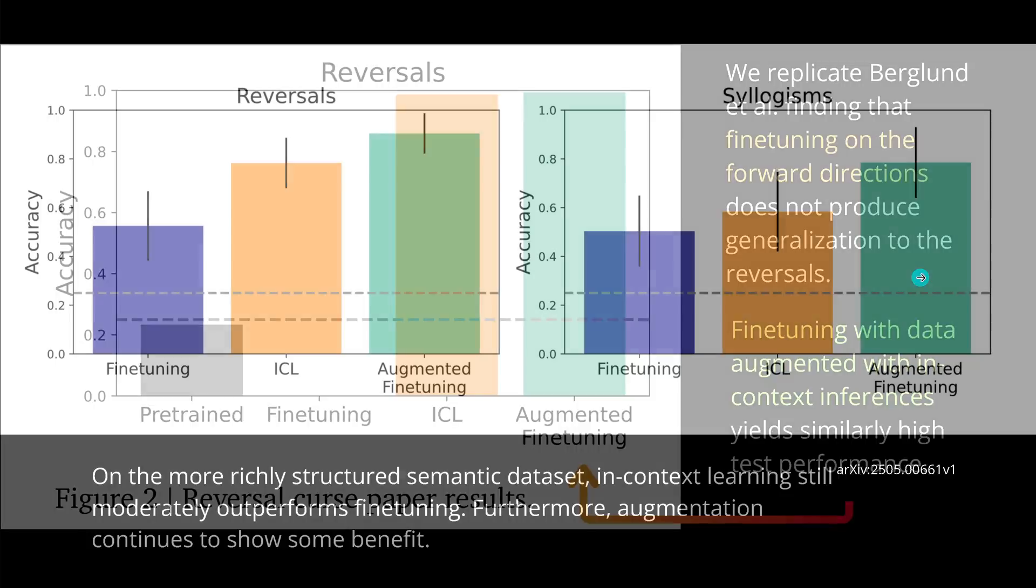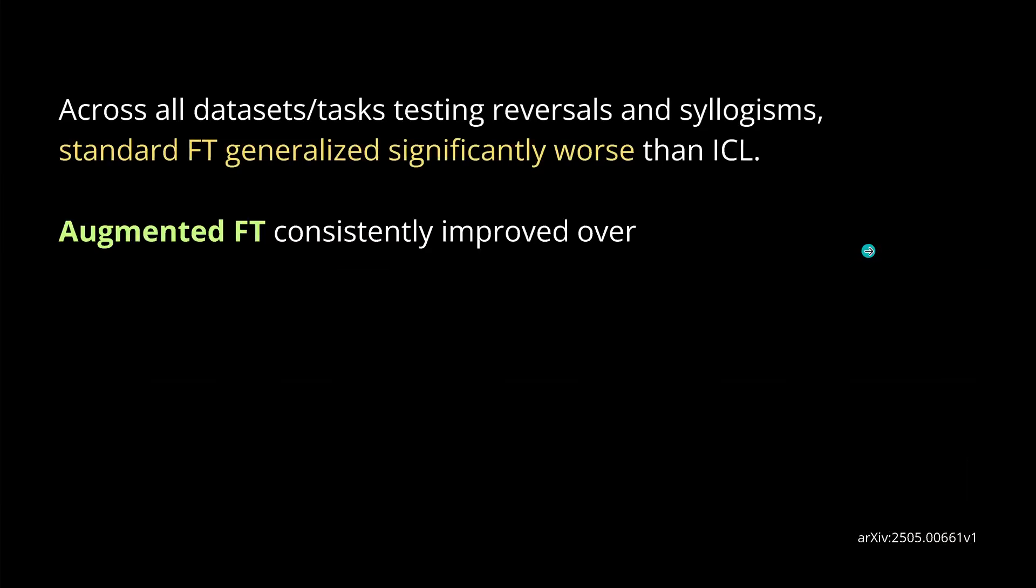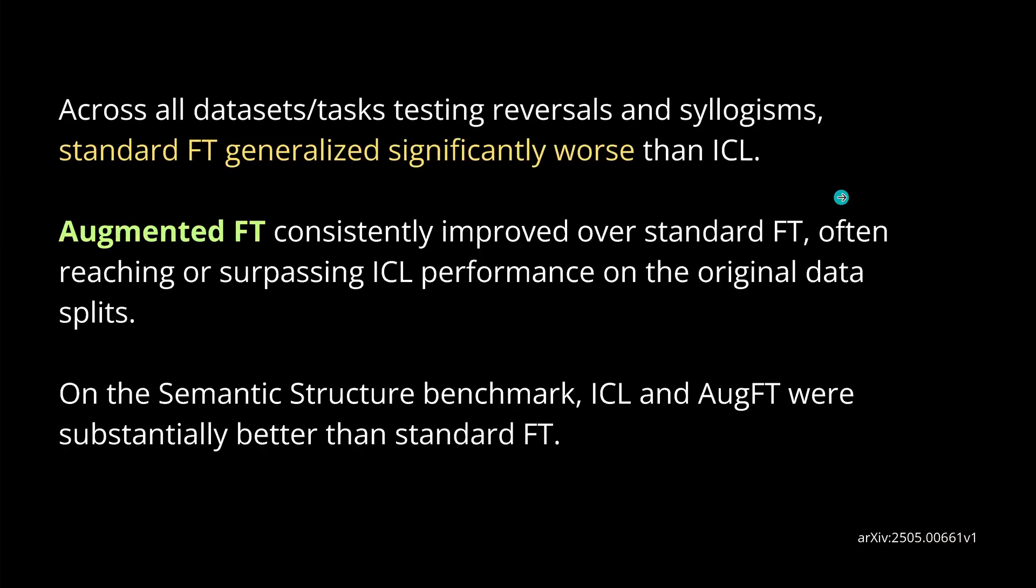I think this is the only graph you need. Yeah, you can have reversals and syllogisms here, then divide it here on this more richly structured semantic data set that we generated now. So you see now, okay, augmented fine-tuning is really the best of both worlds here with this new generated pre-training data sets. So let's come here to an end. Let's have here the insights here of this study.